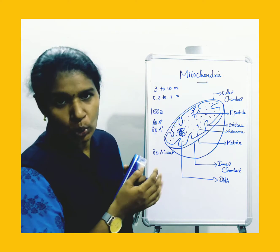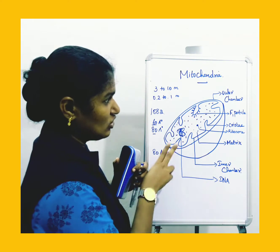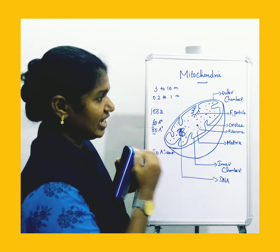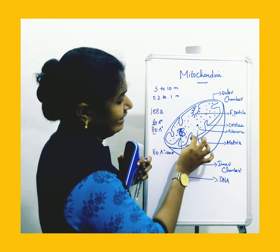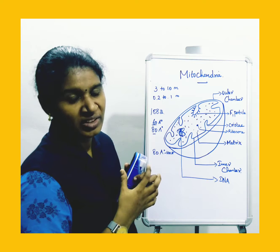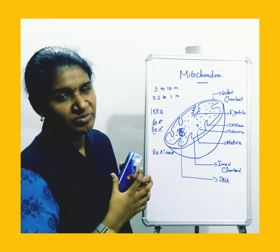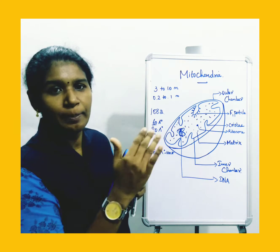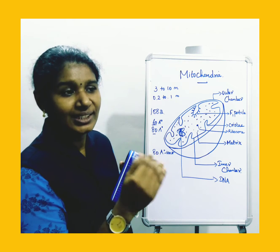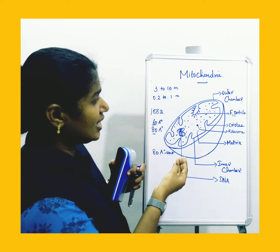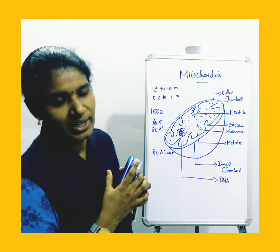The space between the outer and inner chambers is called the inter-membrane gap. This gap is filled with fluid, which provides density and viscosity to the mitochondria.